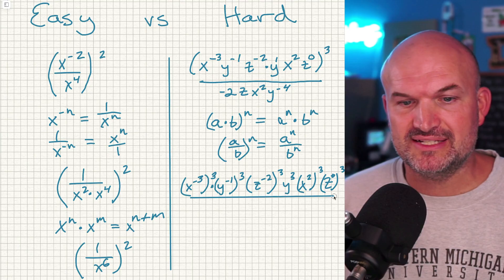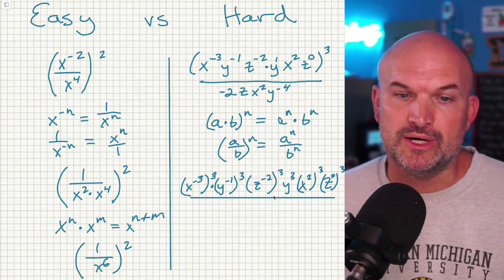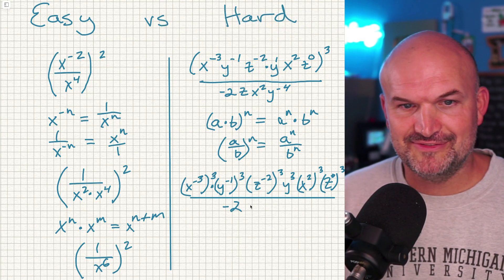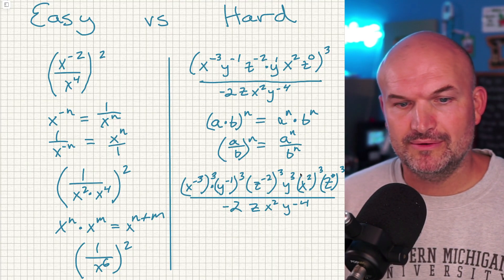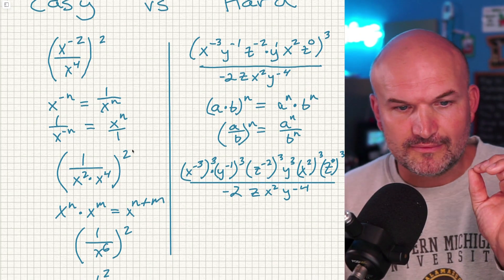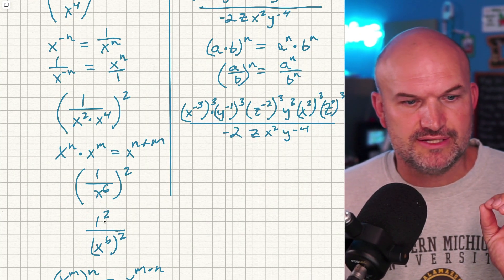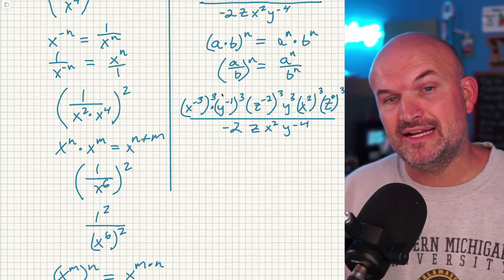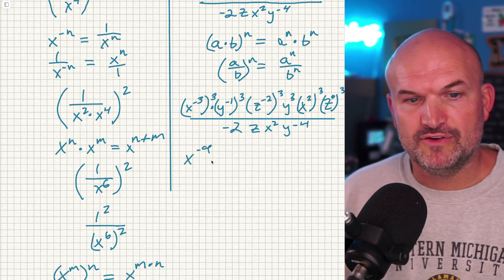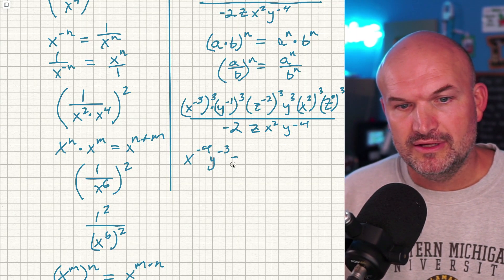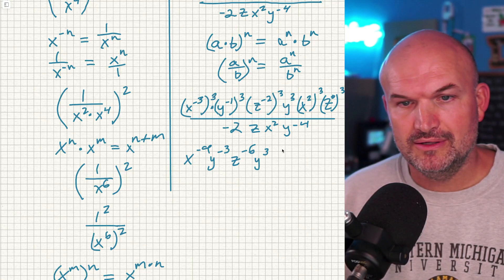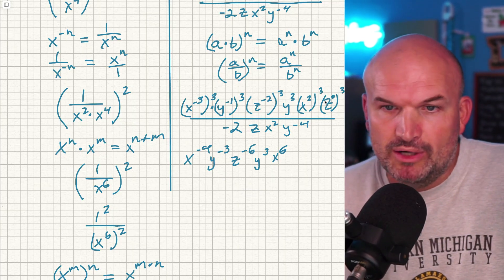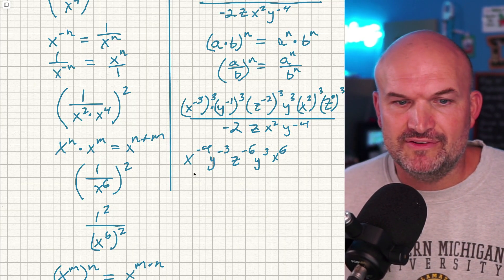So my denominator is going to be negative two z x squared y to the negative fourth power. Using the power rule of exponents — whenever we have an exponent raised to another power, we multiply them. So x to the negative three times three is x to the negative ninth. I'm going to have y to the negative third power, z to the negative sixth power, y to the third power, x to the sixth power. Z to the zero power raised to anything is one, and one cubed is one, so I'll leave that off. Now I have negative two z x squared y to the negative fourth in the denominator.